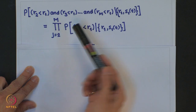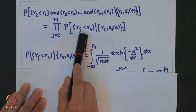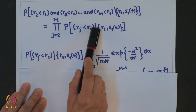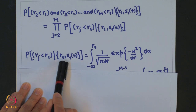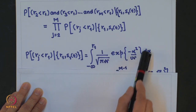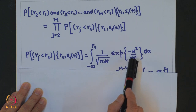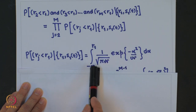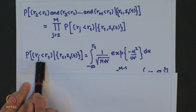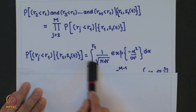Each individual term P(R_j < R_1 | R_1, S_1(t)) is the integral of a Gaussian pdf with zero mean and variance N₀/2, integrated from minus infinity to R_1. This is because R_j, for j ≠ 1, has zero mean and variance N₀/2 when S_1(t) is transmitted.